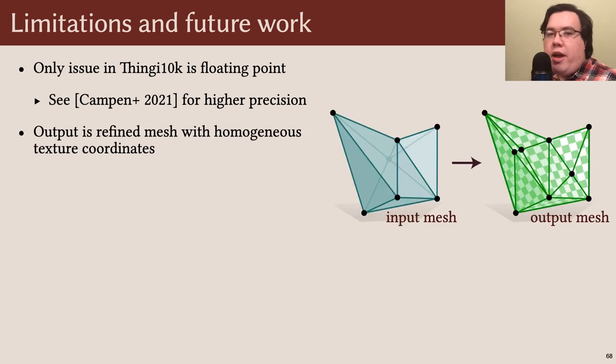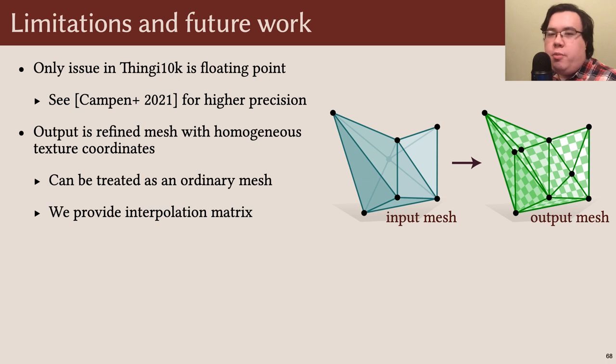On the other hand, it may be undesirable that we output texture coordinates on refined mesh, rather than the input mesh itself. However, this refined mesh can be treated as a standard mesh in downstream applications, and furthermore, we also produce a sparse matrix, allowing the user to interpolate any other data from the input mesh to this refined output.